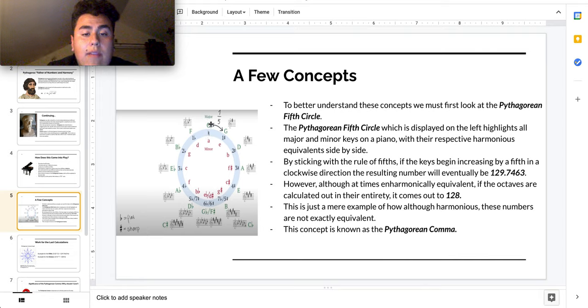And again, just to highlight, right here we have a major C key and A minor. And these are technically inharmonious, since they're right here next to each other on the Pythagorean fifth circle. However, as you are soon going to see, there obviously is a deviation, as these numbers are not the same, even though they're equivalent inharmonically.